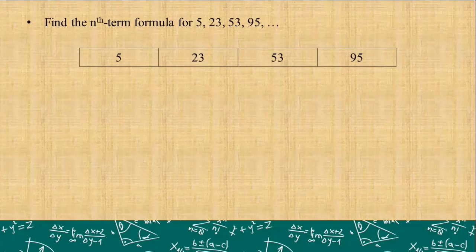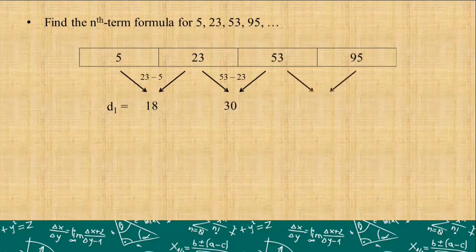Let's look at 5 and 23 first. We will subtract them from each other. 23 minus 5 is 18. Again, this first layer of difference is called d₁ or first difference. After subtracting 5 and 23, we have 23 and 53. 53 minus 23 is 30. And for the last pair, 95 minus 53 is 42. By the way, our subtraction is right minus left.